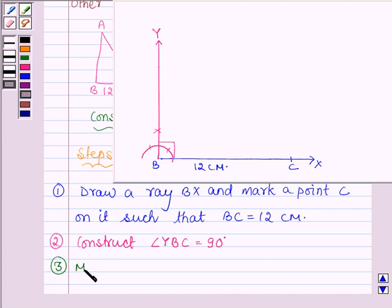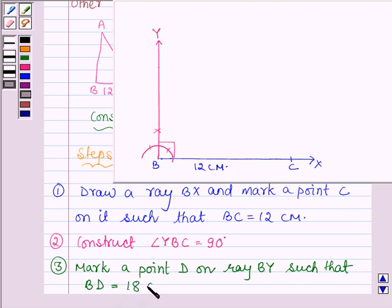Now we shall mark a point D on the ray BY such that BD is equal to 18 cm. So let us take a point D on this line such that BD is equal to 18 cm.